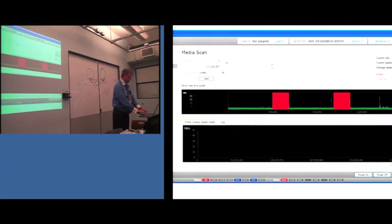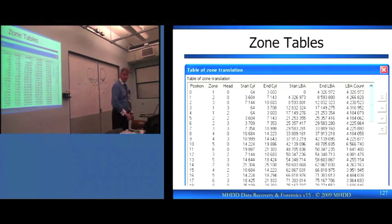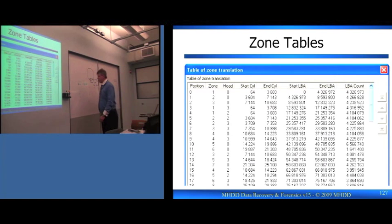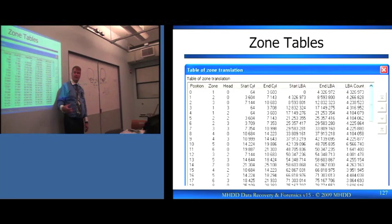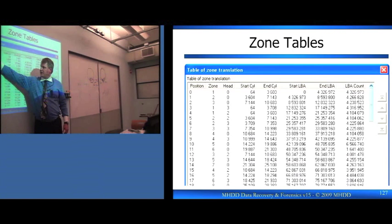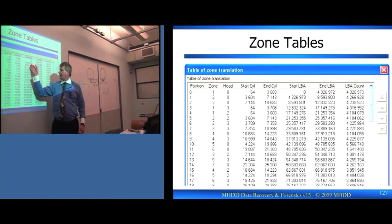Let me show you a zone table real quick. This is a zone table as I quickly discussed. This is an actual zone table pulled using PC3000 from a drive. So you can actually look at what your zones are, where this head is, and what that content is.